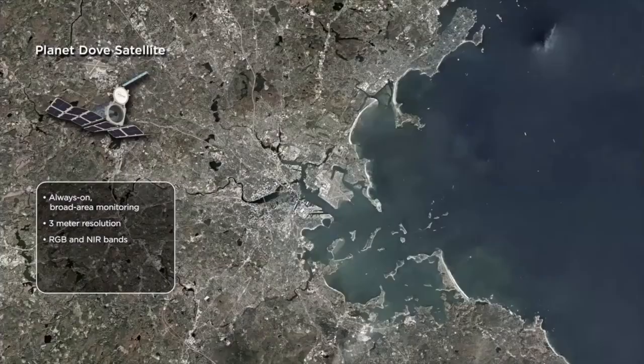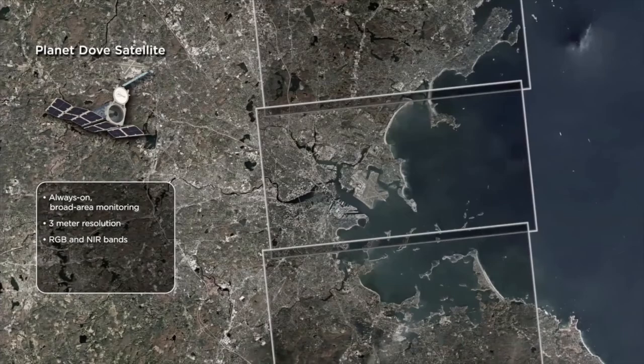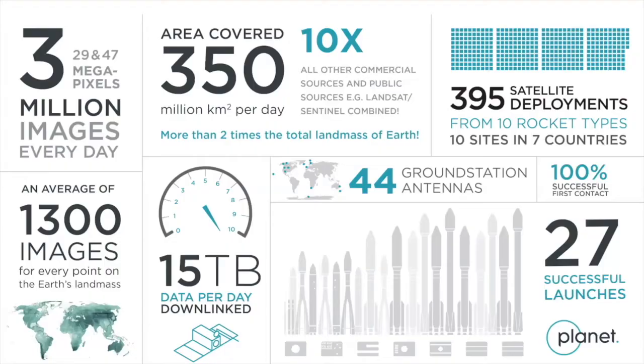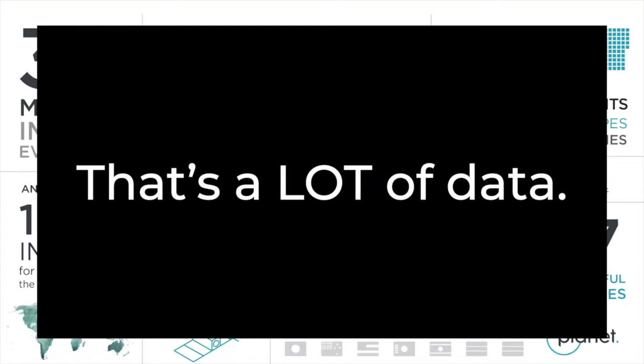We also have 21 SkySat satellites that take 50-centimeter resolution images. This animation is slightly out of date because we just lowered the orbit altitude of all those satellites to get higher resolution. So we can get context images of the planet and then zoom in with the SkySat images. Between these two constellations, we downlink 15 terabytes of data every single day, covering 350 million square kilometers. This is a lot of data.